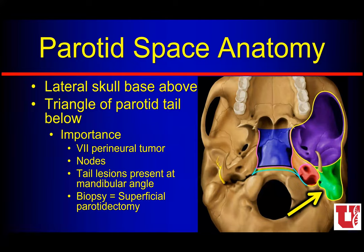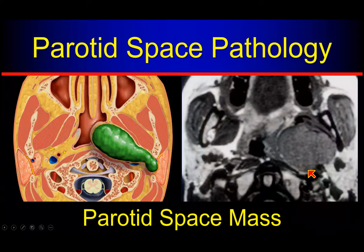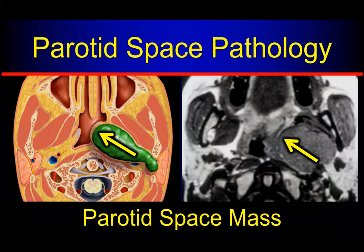We remember that V3 is coming out of foramen ovale to go to the masticator space, and we have the stylomastoid foramen between the mastoid and the styloid process where the facial nerve comes out. The parotid has this attachment at the skull base between the styloid and the mastoid process. So we remember that we have this attachment up at the skull base from the suprahyoid neck cervical soft tissues. A generic lesion from the parotid space is going to push the parapharyngeal fat anteriorly and medially, helping me guess the lesion is arising from the parotid space.